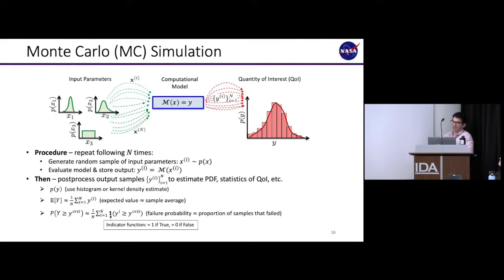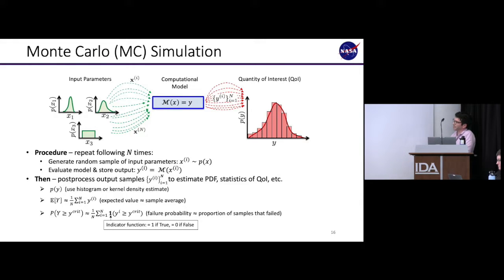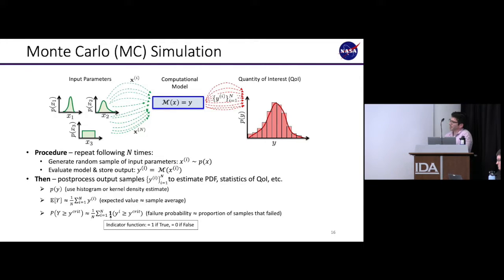Monte Carlo simulation: repeat this procedure N times — generate a random sample of your input parameters, plug it into your model, compute and store the output. At the end you have N outputs describing your quantity of interest. Then do post-processing: make a histogram to estimate the shape of that distribution. You should leave today knowing Monte Carlo simulation — it's a simple idea but can be powerful. The expected value is just the sample average. Even probability of failure can be estimated this way.